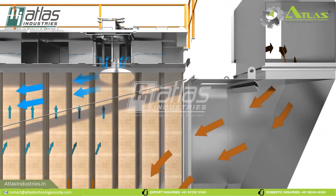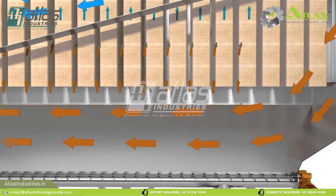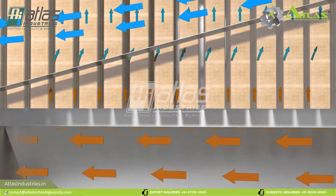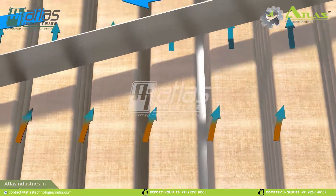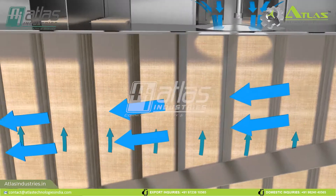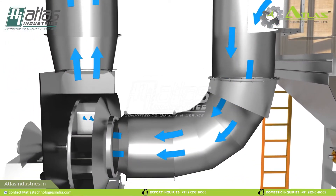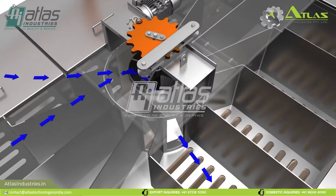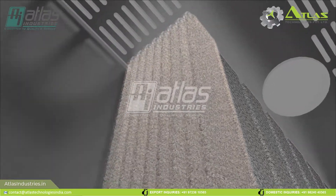The pollution control unit manages airborne dust. As air along with dust particles enters, heavy dust particles are trapped by the pre-separator. Air is then made to pass through a series of bags inside the bag filter, where lighter particles accumulate on the bags and clean air passes through the dust collection system.